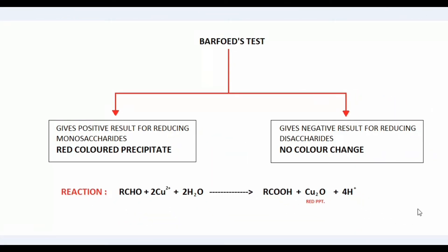Here comes the Barfoed's test. In Barfoed's test we use Barfoed's reagent to differentiate between whether our sample is a reducing monosaccharide or a reducing disaccharide. It gives a positive result for reducing monosaccharides — that is a red color precipitate. The red color is formed due to the formation of copper oxide when our sample reacts with Barfoed's reagent.